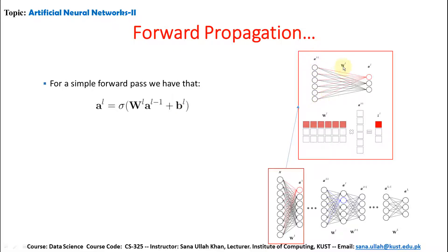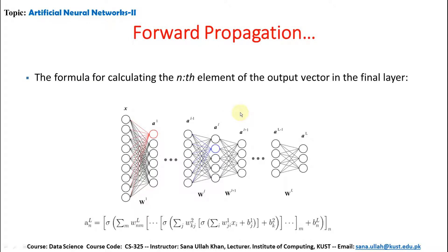Here, a^(l-1) is multiplied by weight W^l to give Z. So the inputs X lead to a^i or a^l, which are the weights for each neuron. Then a^(l-1) combined with W^l gives a^l, then a^(l+1), and so on. The formula for calculating the nth element of the output vector in the final layer uses: a^n = sigma(sum_m(W^mn_l * a^(l-1)_m)).